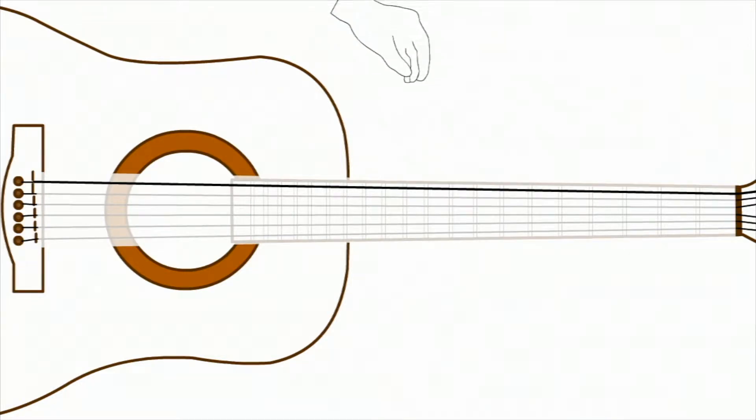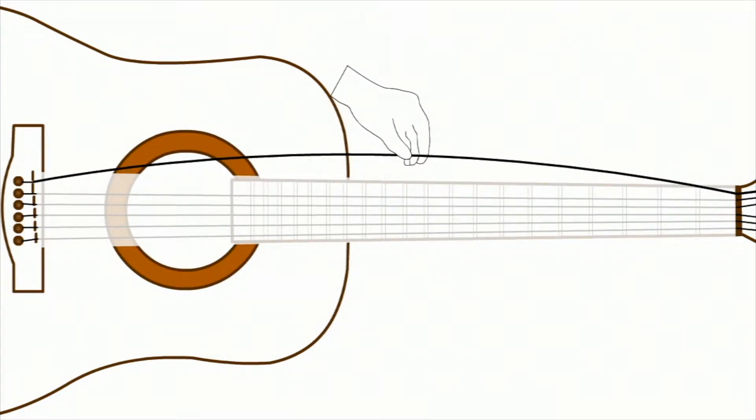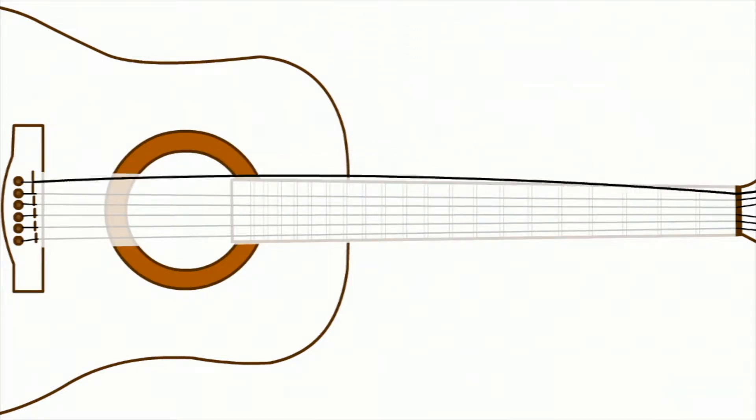When the guitar string is plucked, it automatically returns to its resting position. However, it moves to the opposite position because of momentum. Then it again returns to the resting position. So momentum causes the string to oscillate back and forth.